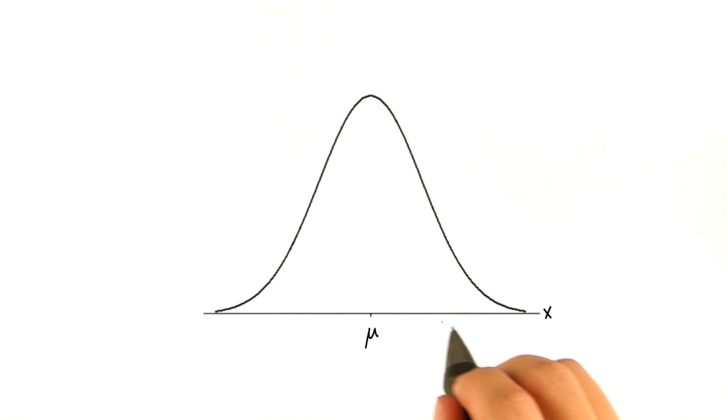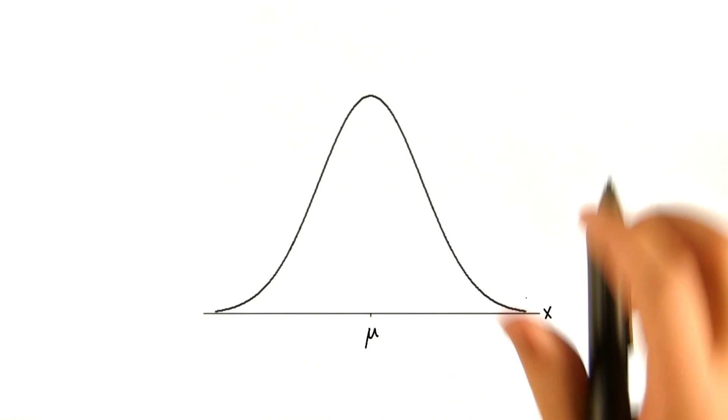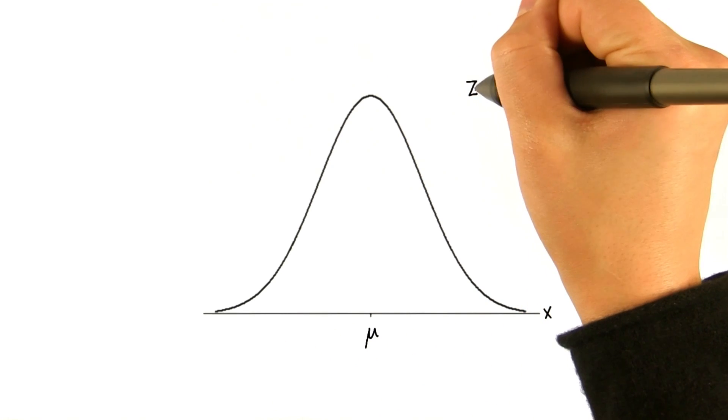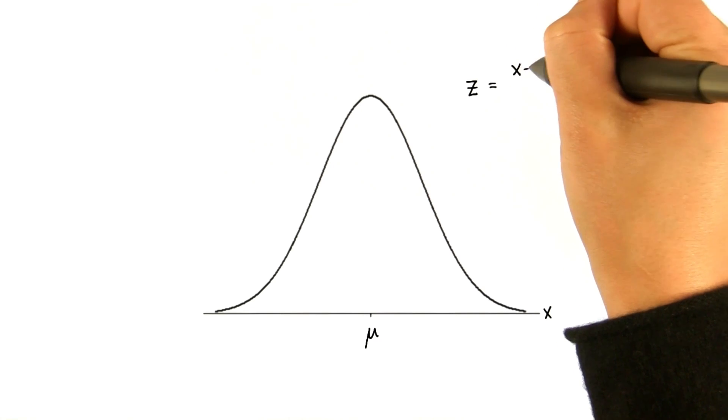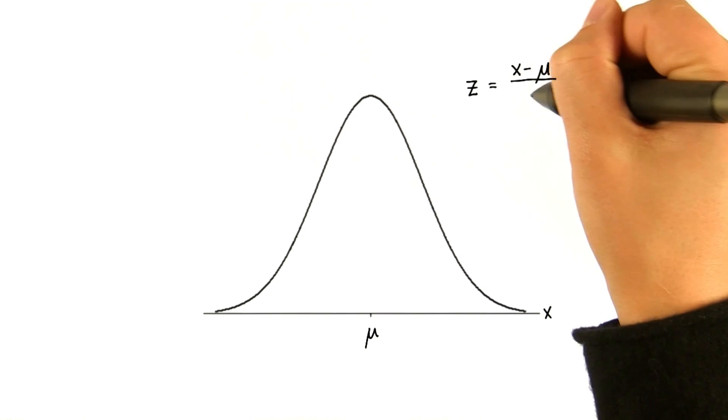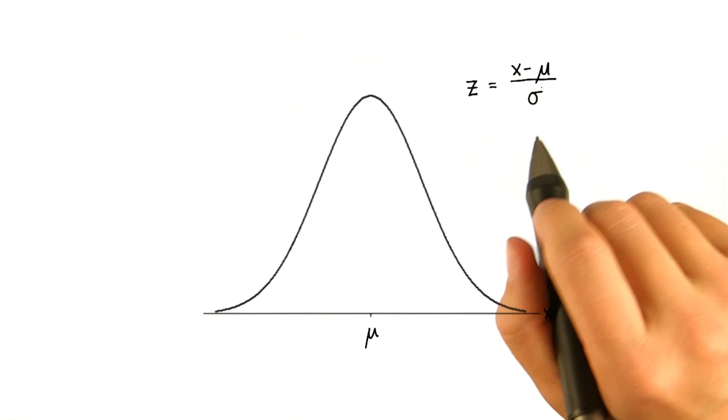When we standardize any score on the x-axis, we get the z-score, and we already called it z before. We're always going to subtract the mean from the x value, and then divide by the standard deviation.